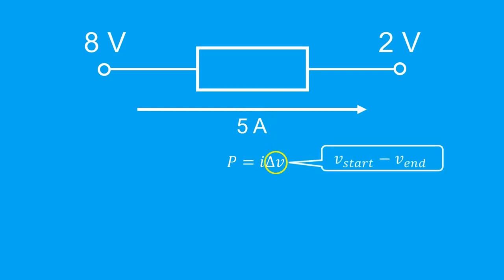Recall that delta V is given by V start minus V end, the node voltage where the current starts entering the device minus the node voltage where the current ends its journey through the device.